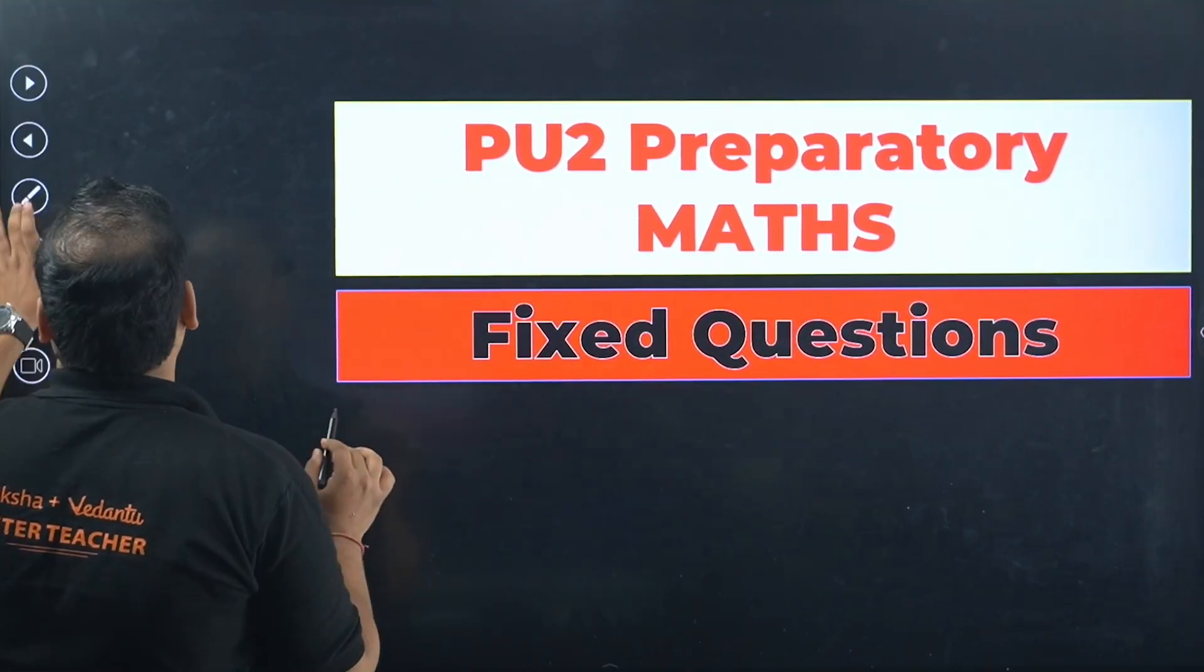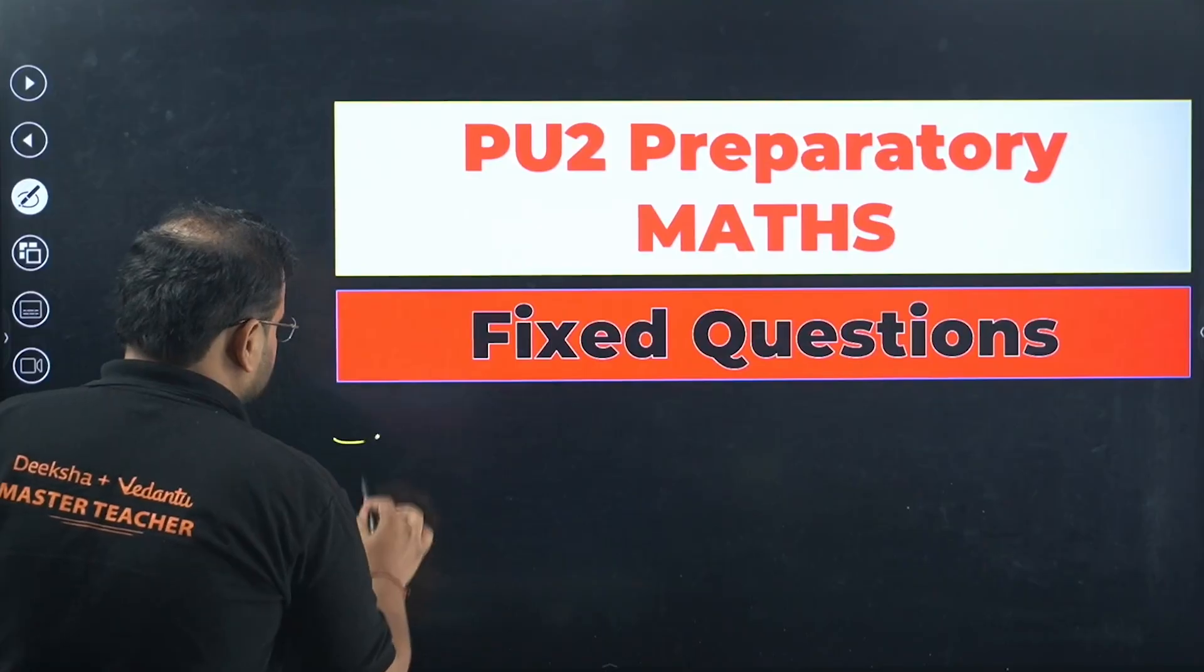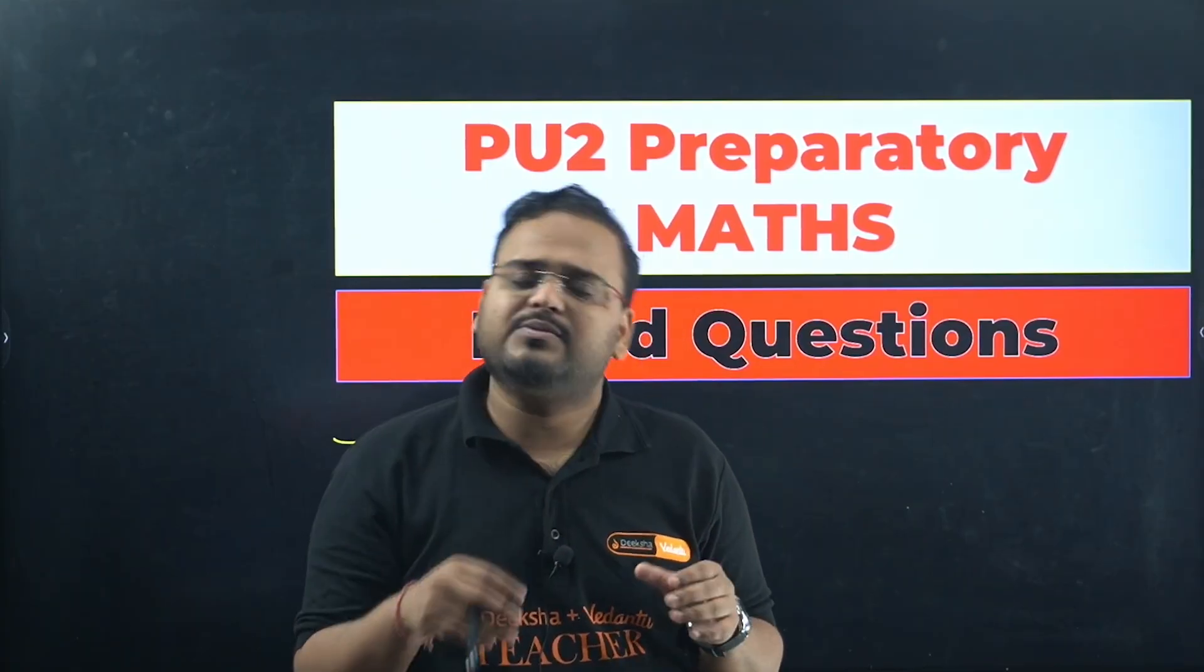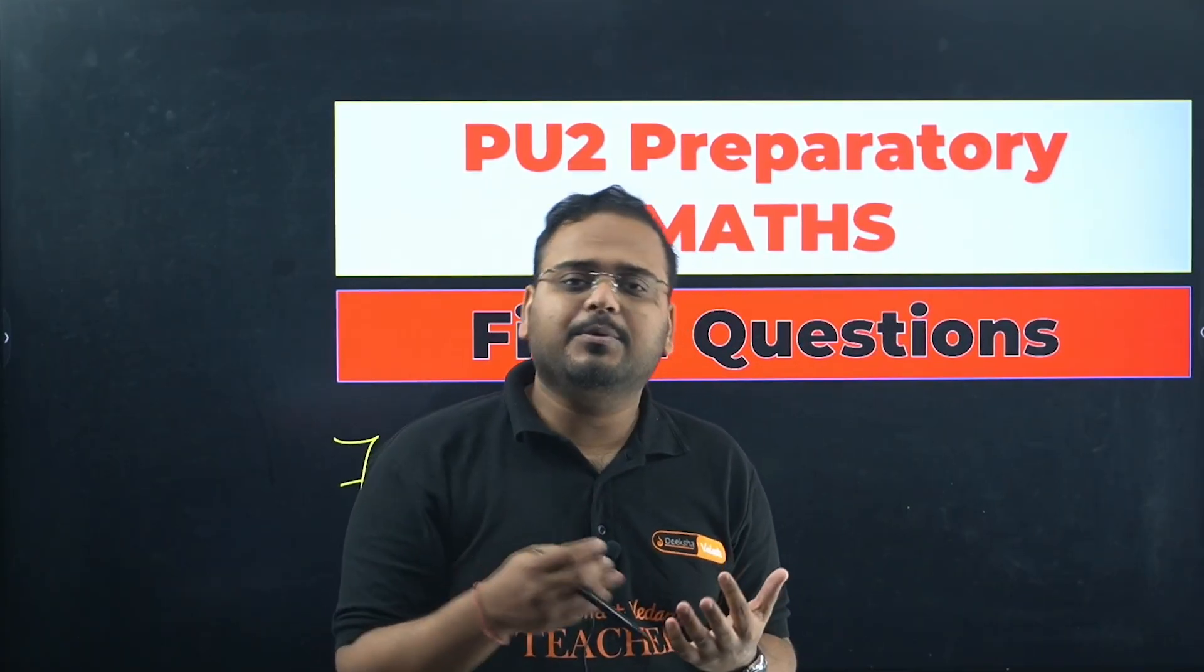I'm telling you it's very easy. You can get this 70 plus score in your mathematics if you follow and solve these fixed questions for all 13 chapters.